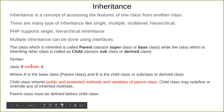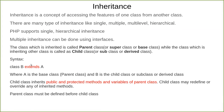What are the things a child class can inherit? The child class can inherit public and protected methods and variables of the parent class. It cannot inherit private variables and private methods. The rule is that when you are defining the child class, the parent class must already be defined. The parent class definition must come before the child class definition.